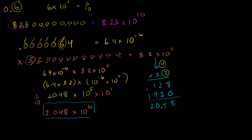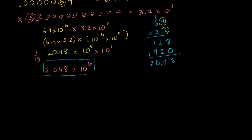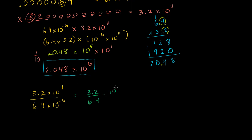Now I've done a lot of multiplication — let's do some division. Let's divide 3.2 times 10 to the 11th power by 6.4 times 10 to the minus 6. This is equal to 3.2 over 6.4 times 10 to the 11th over 10 to the minus 6 — we can separate them out because it's associative. So 3.2 over 6.4 is just equal to 0.5, right? 32 is half of 64, or 3.2 is half of 6.4.